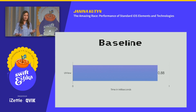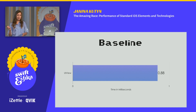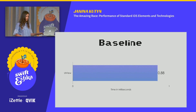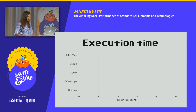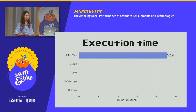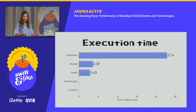The exact values are not as important as how each approach compares to each other. I thought it'd be useful to start with a baseline measurement of drawing a single UIView with a solid background color onto the screen — that measured in at 0.88 milliseconds. Here are the results for drawing text: UITextView came in at a huge 27 milliseconds. UILabel was six times faster at 4.39. Then Text Kit, then text layer, and the fastest was Core Text.